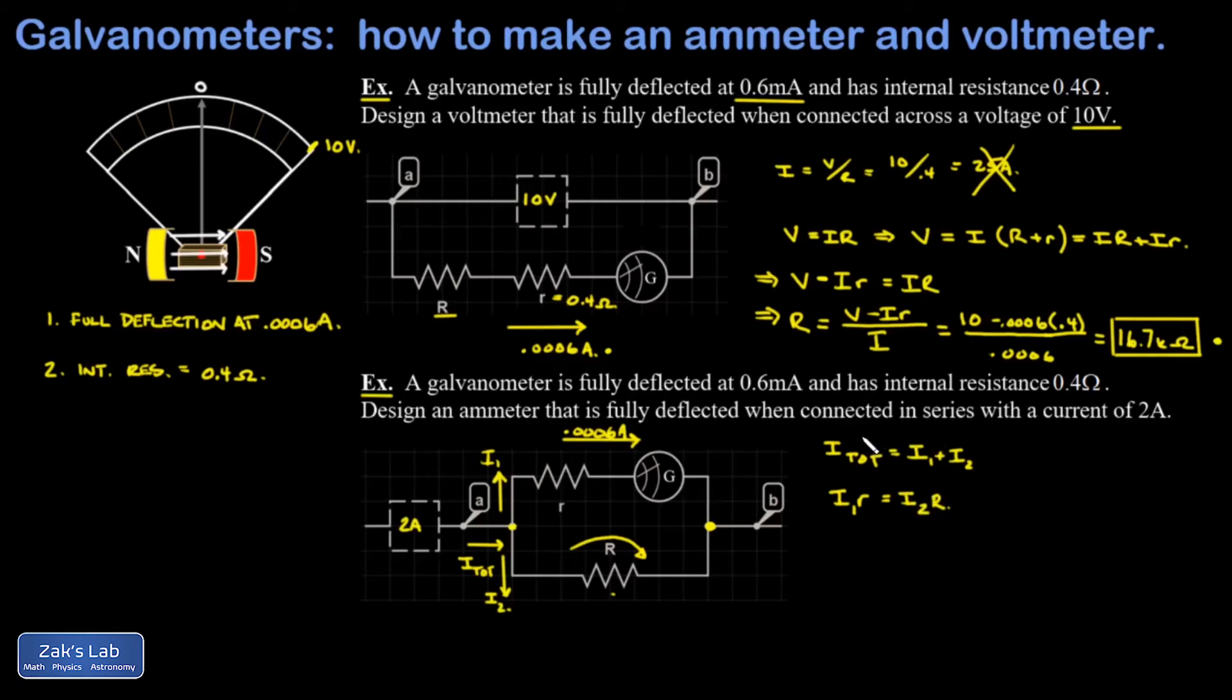I directly know I total and I1. So in the first equation, I'm going to solve for I2 and then substitute it into the second equation, and then we'll solve for big R.